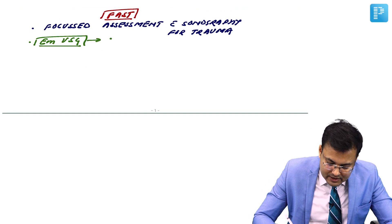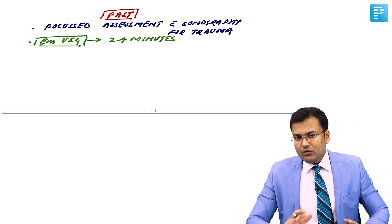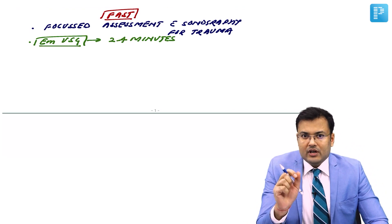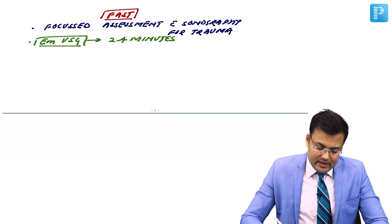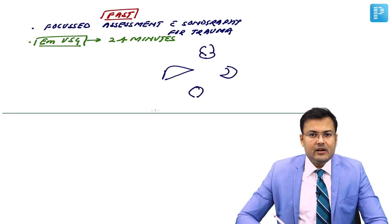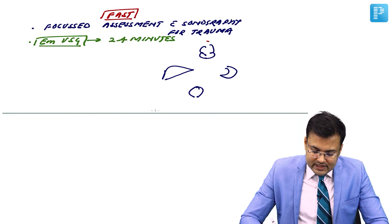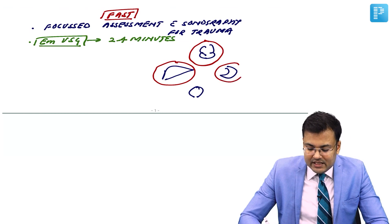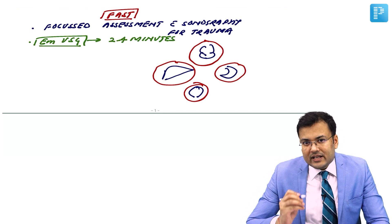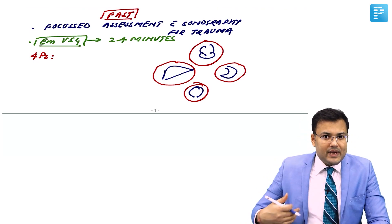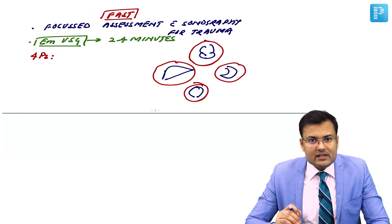FAST is performed quickly within two to four minutes. Whenever FAST is positive, it means there is bleeding or perforation, and fluid collects in assessed areas. FAST assesses the heart, liver, spleen, and pelvis — specifically the pericardial sac, perihepatic region, perisplenic region, and pelvis.